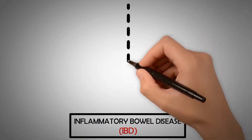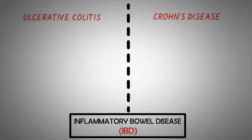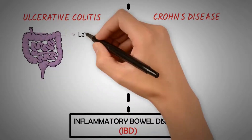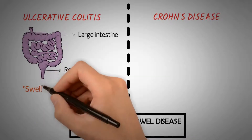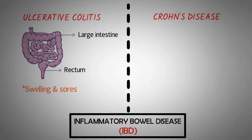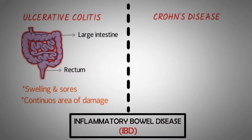The most common types of IBD are ulcerative colitis and Crohn's disease. The diseases are similar but affect different parts of the digestive system. Ulcerative colitis affects the large intestine and rectum, causing swelling and tiny open sores or ulcers on the surface of the lining. The ulcers can bleed and produce pus. With ulcerative colitis, there is a continuous area of damage along the large intestine and rectum rather than patches of damage.